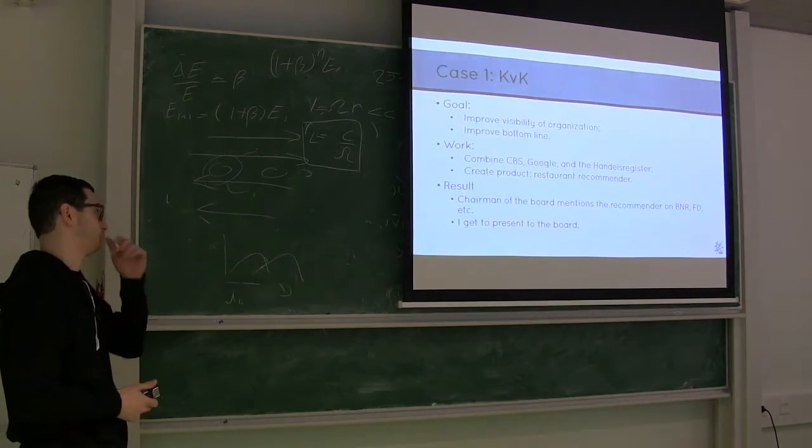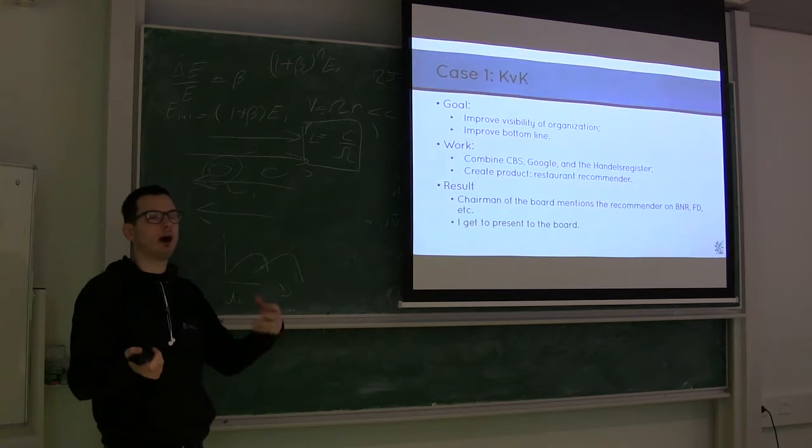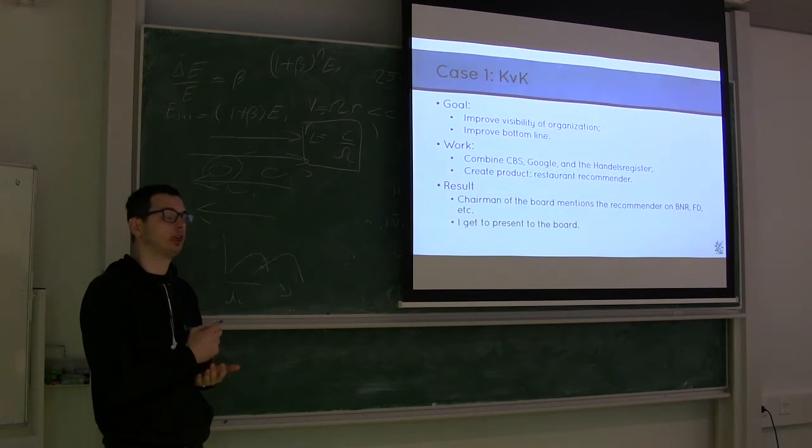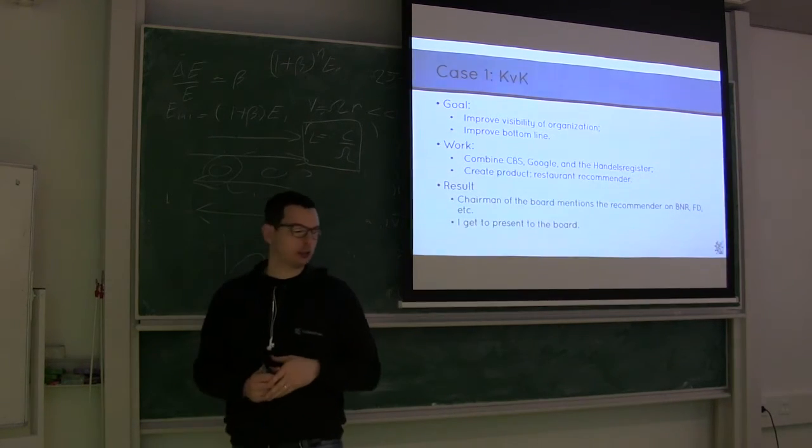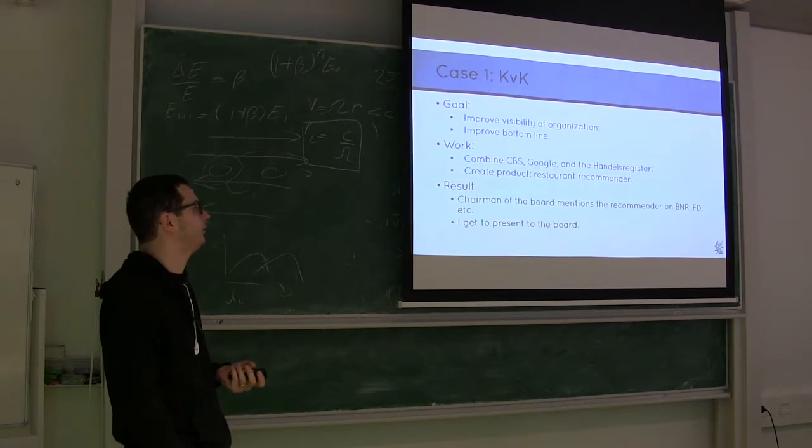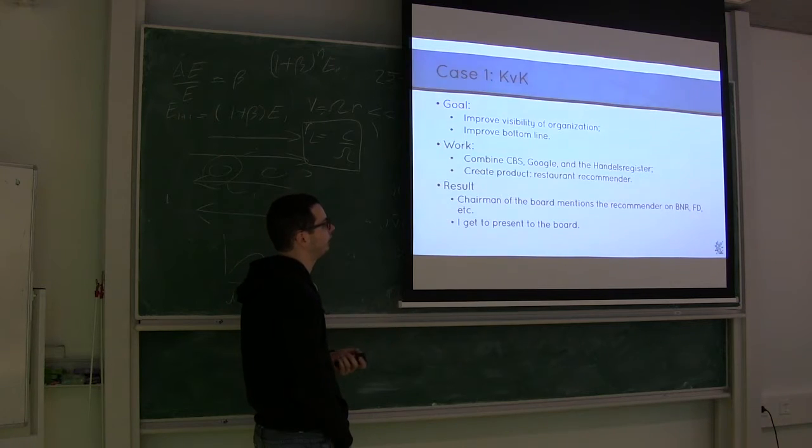So they really feel useless. So they called us and said, well, we would actually want to improve our visibility. So we went there, and what we did was to combine data from the Central Bureau of Statistics, the Dutch Central Bureau of Statistics, Google, and the Chamber of Commerce database. And the product we wanted to create to increase the visibility was kind of a restaurant recommender. And I'll show you how that looks like. The result was that the chairman of the board of the Chamber of Commerce mentioned the recommender on the Financiere Dagblad, the Dutch Financial Time, the Dutch Business Radio, and I got to present the results to the board.